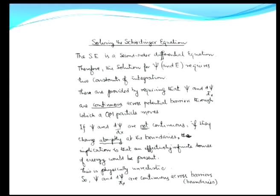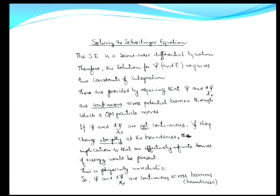The Schrödinger equation is a second-order differential equation, so the solution for psi requires two constants of integration. These are provided by requiring that both psi and the first derivative of psi are continuous across any potential barrier. If psi or d-psi/dx change abruptly at a boundary, the implication is that effectively infinite sources of energy would be required, which is physically unrealistic. Therefore, the boundary conditions — continuity of psi and its first derivative — give us two constants of integration which allow us to solve for psi exactly.